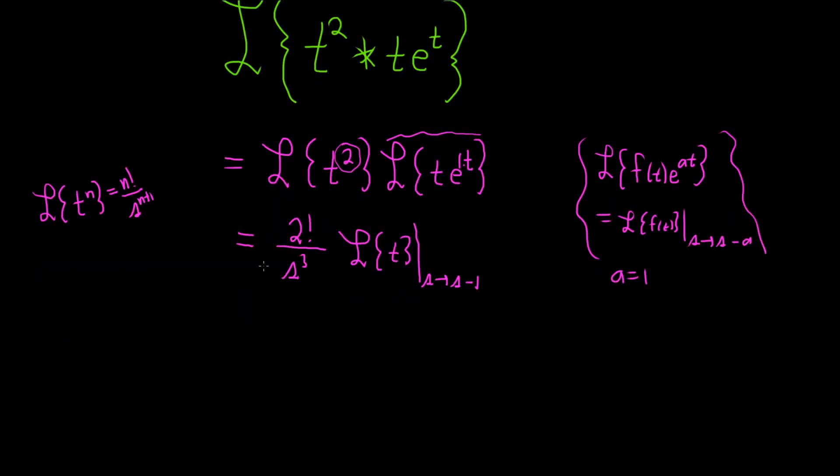So 2 factorial is 2, so that will stay there. So this is 2 over s³. Here we're going to use the same formula we used before. So it'll be 1 factorial over and then it's 1 higher on the bottom, so s².